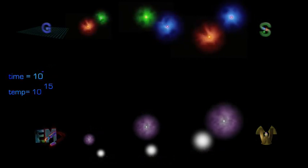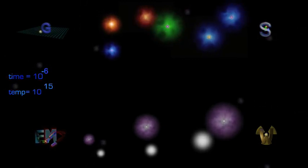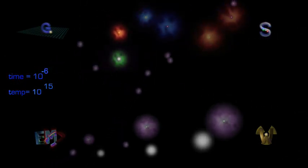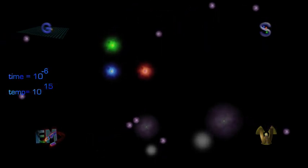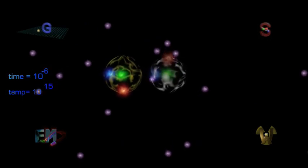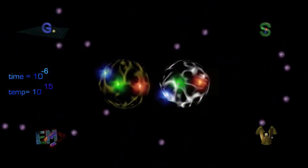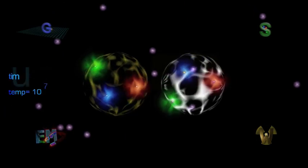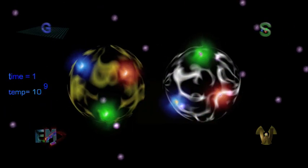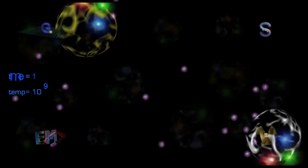At 10 to the minus 6 seconds, up and down quarks have formed protons and neutrons. All heavy quarks have decayed, all heavy leptons have decayed, all antimatter has disappeared. And by the time the universe is only one second old, protons and neutrons are already getting together to form the lightest atomic nuclei.